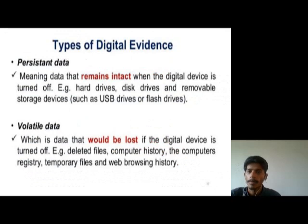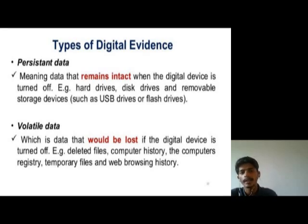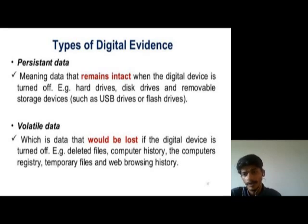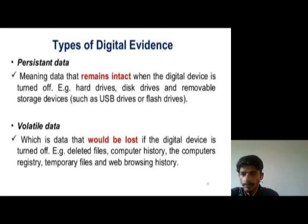Types of digital evidence. Persistent data: data that remains intact when the digital device is turned off. Examples include hard drives, disk drives, and removable storage devices such as USB drives or flash drives. Volatile data: data that would be lost if the digital device is turned off. Examples include deleted files, computer history, temporary files, and web browsing history.